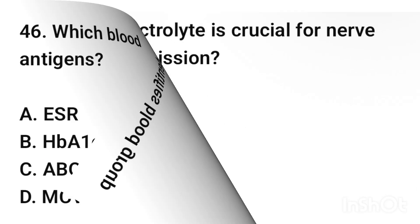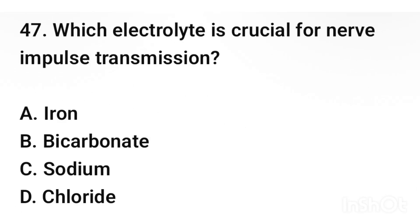Question number 47. Which electrolyte is crucial for nerve impulse transmission? The correct answer is option C: Sodium.